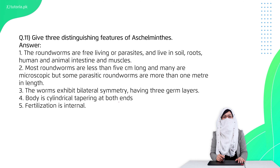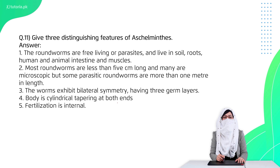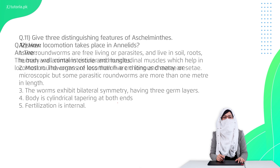Question 11 is: give three distinguishing features of nematodes (phylum Nematoda). These are commonly roundworms, mostly parasites or sometimes free-living. They are less than five centimeters, show bilateral symmetry, and are cylindrical, tapered at both ends.